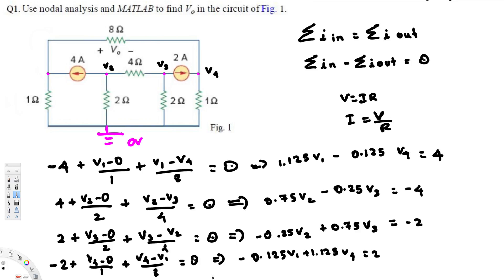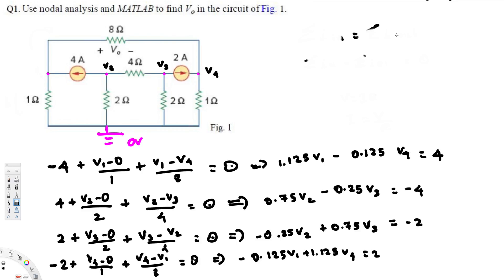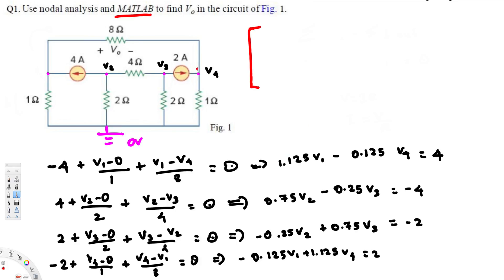Now we have all four equations. We need to arrange them in matrix form and solve, and since it is a 4×4 matrix it is difficult to do by hand — that is why they asked us to use MATLAB. Let's go ahead and list the values and set up the matrix.